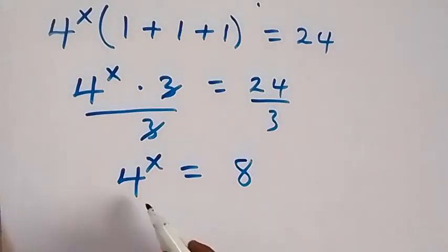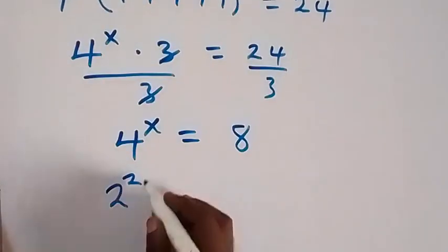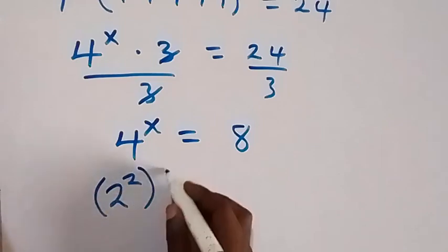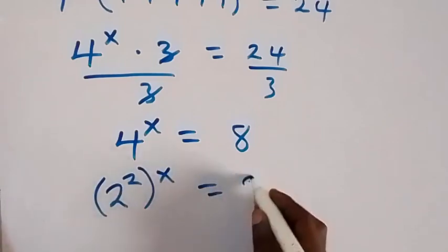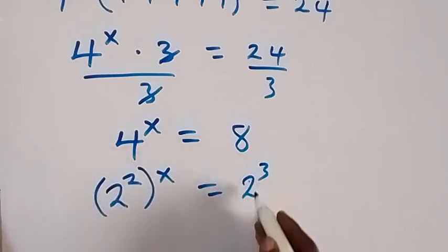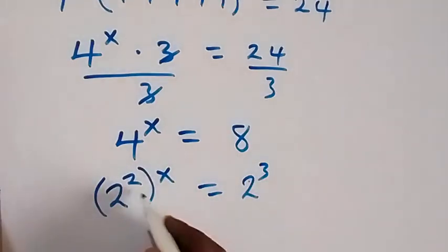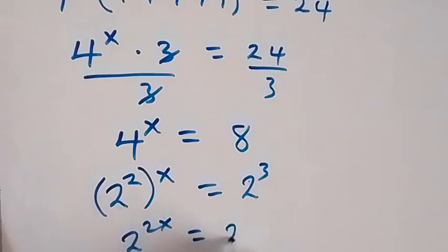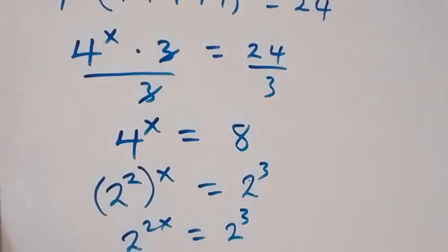Then we discover we can change both sides to have the same base, and that's base 2. So we have 2^2, which is 4, raised to power x. Also we have this as 2^3, which is 8. Then the powers multiply: 2^(2x) = 2^3.